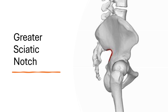Notably, the sciatic nerve — the largest nerve in the body — passes through the greater sciatic notch. This nerve supplies the posterior thigh and most of the lower leg, making its function crucial for proper movement and sensation.